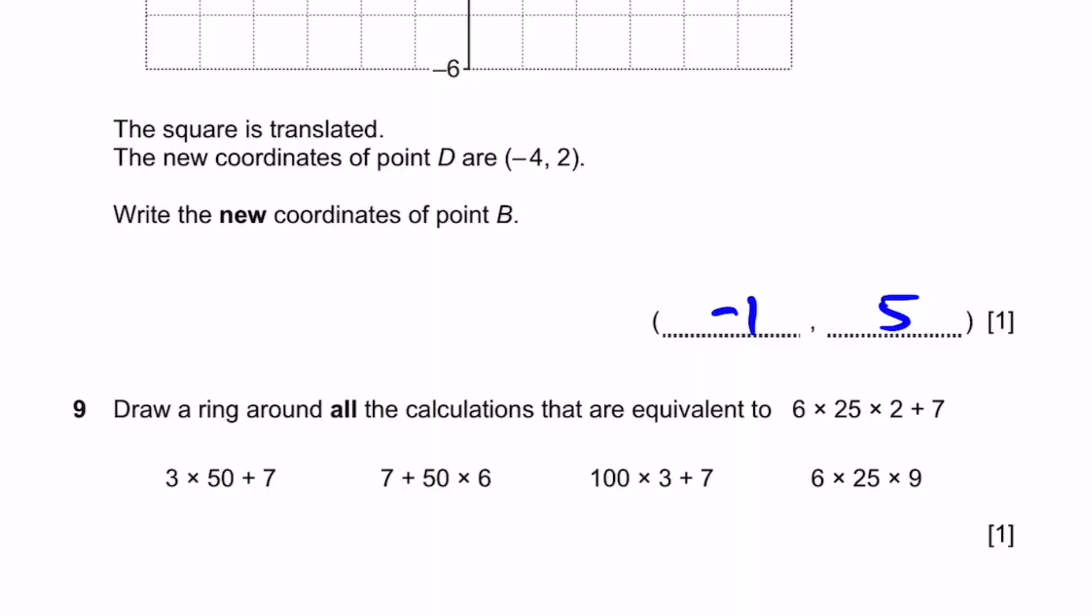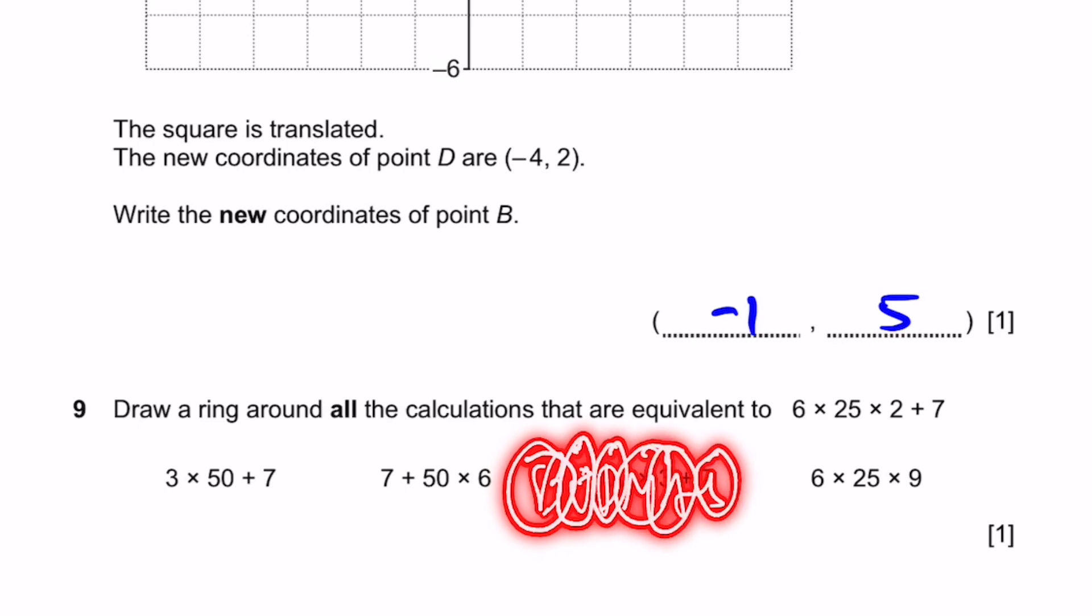Question 9. Draw a ring around all the calculations that are equivalent to 6 times 25 times 2 plus 7. So, we do multiplication first and then addition. This is the rule of BODMAS, where it's brackets, others, which is exponentiation for example, division, multiplication, addition, subtraction.